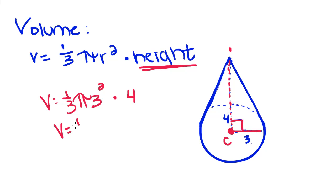So V is equal to one-third, 3 squared is 9, so 9 pi times 4. One-third of nine is 3, so 3 pi times 4. So the volume of this cone is 12 pi,